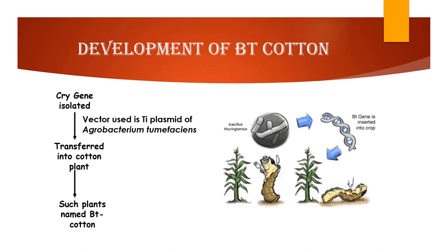If this plant is infested with cotton bollworms, we observe that the insect dies after feeding on the plant parts. So we see that resistance is provided against insects without the need for insecticides.